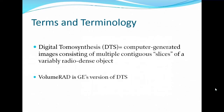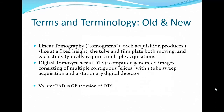It's always best to start with terminology so we're all on the same page. Digital tomosynthesis, or DTS, is a modality consisting of computer-generated images of multiple contiguous slices of variably radio-dense objects like the human body. VolumeRAD is GE's version of it. The old-school linear tomography involved multiple acquisitions with a tube and plate moving in opposite directions, whereas the digital version generates multiple slices with one tube-sweep acquisition and a stationary digital detector.